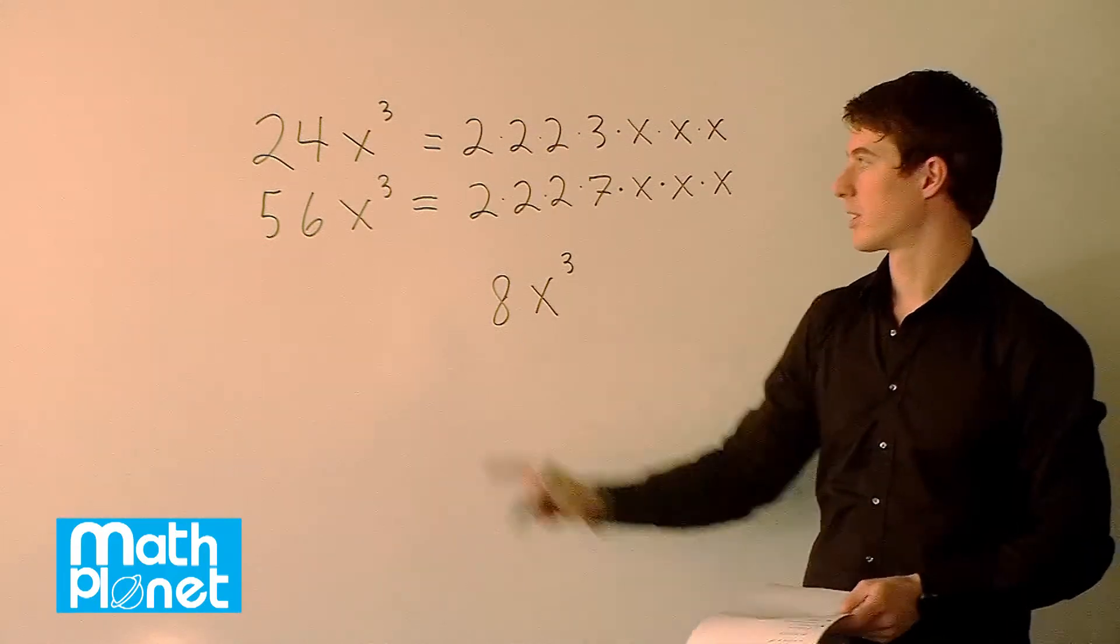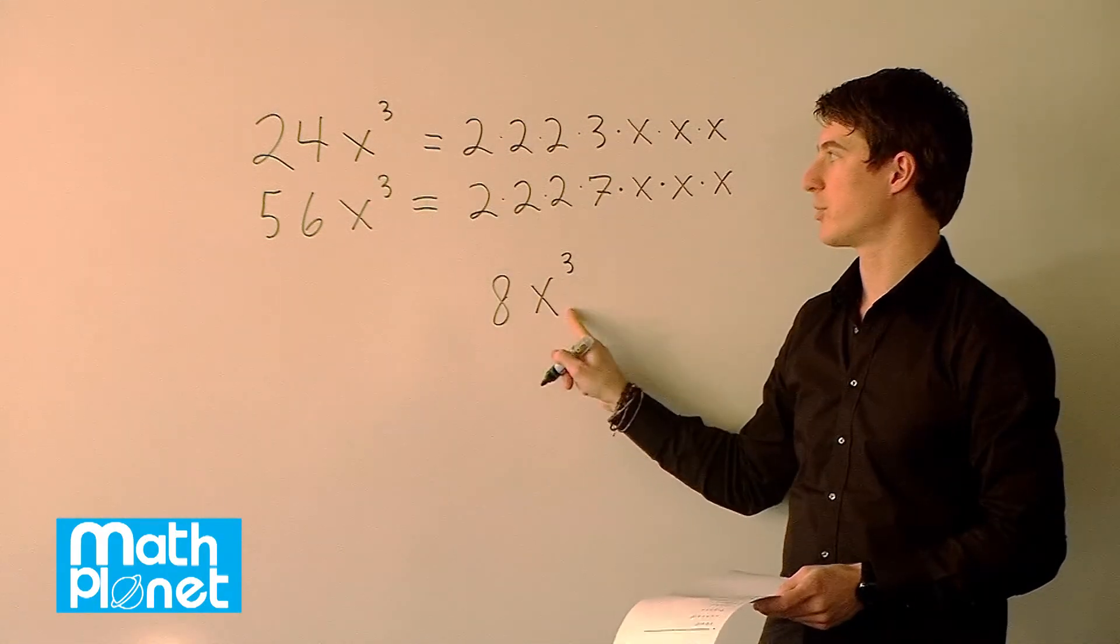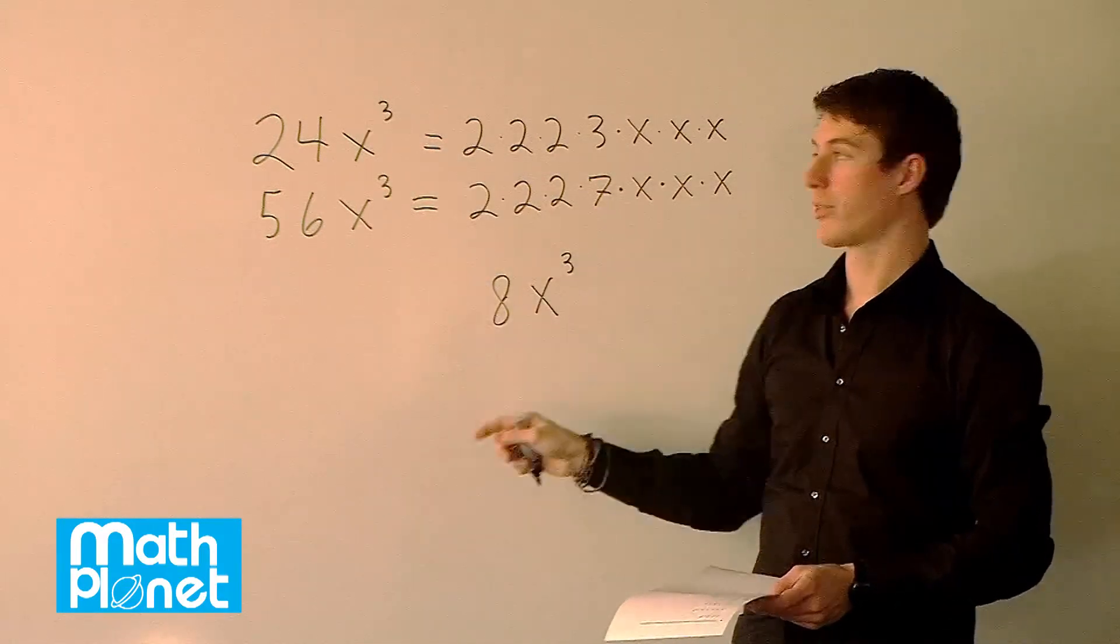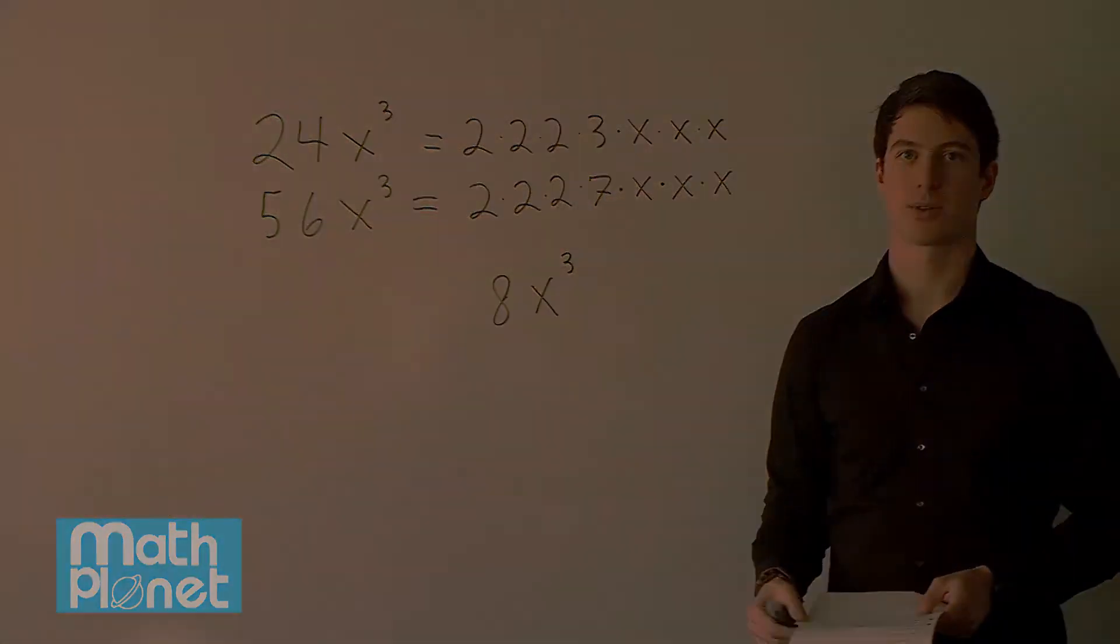So the greatest common factor in both of these is 8x cubed. If we factor out 8x cubed we would have something left in both of these, and that would be the 3 in this one and the 7 in this one.